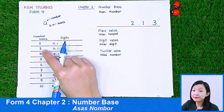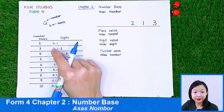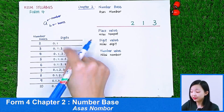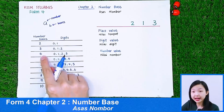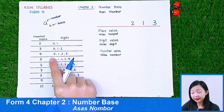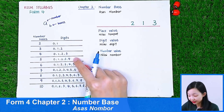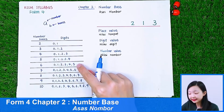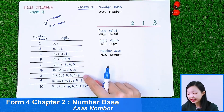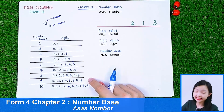And for numbers with number base 3, the digits include 0, 1, 2. And for number base 4, the digits include 0, 1, 2, 3. And so on — for number base 5, 6, 7, and 9. Let me give you an example.